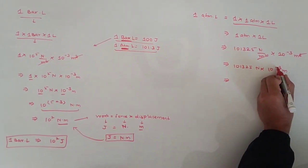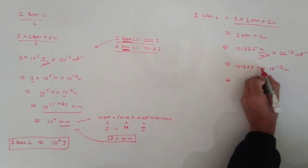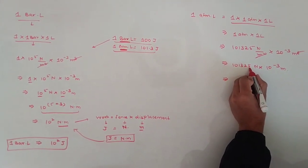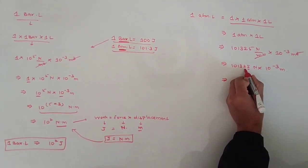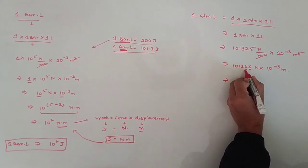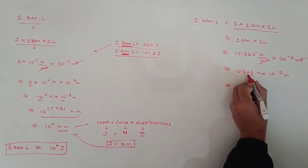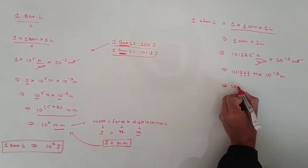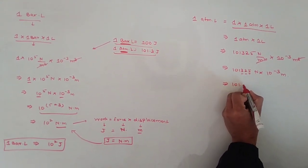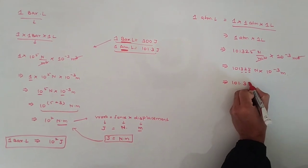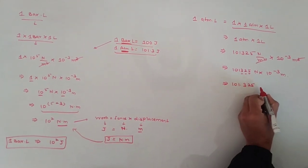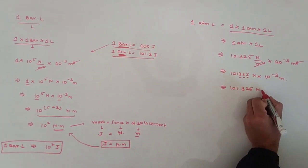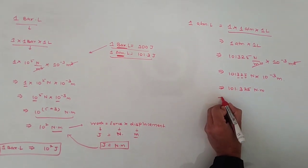Because the power is minus 3, we move the decimal point 3 places, giving us 101.325 Newton·meter.